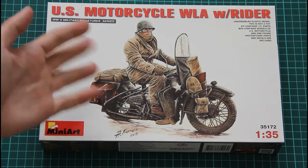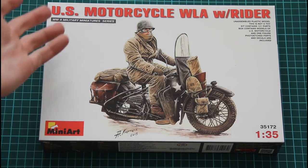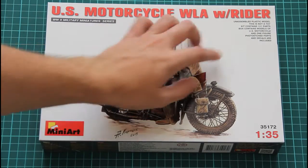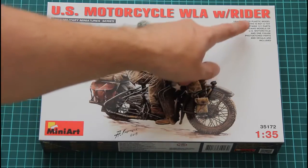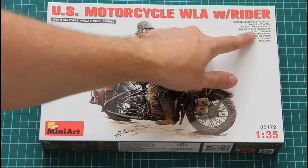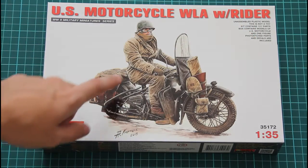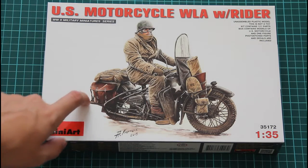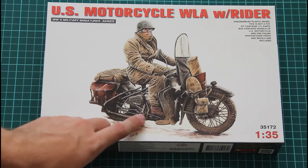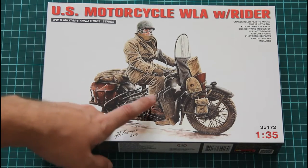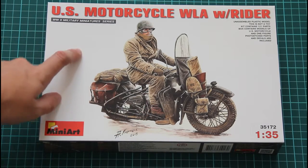It's obvious that the box itself is not that big. Here you can see a comparison with my hand. Here we have some short information about the kit. The kit contains 121 parts. Inside you will find parts for the motorcycle and for one figurine of the rider, plus photo-etch parts and decals.